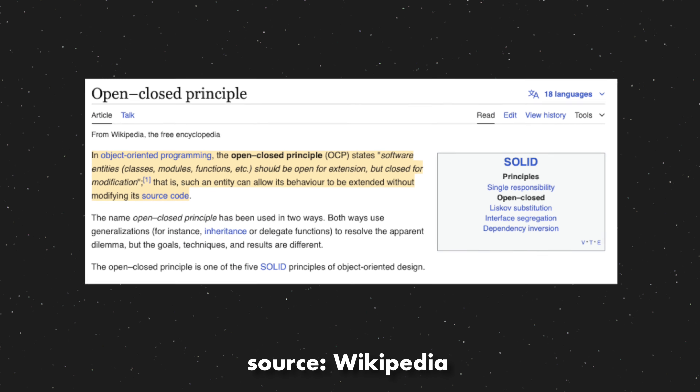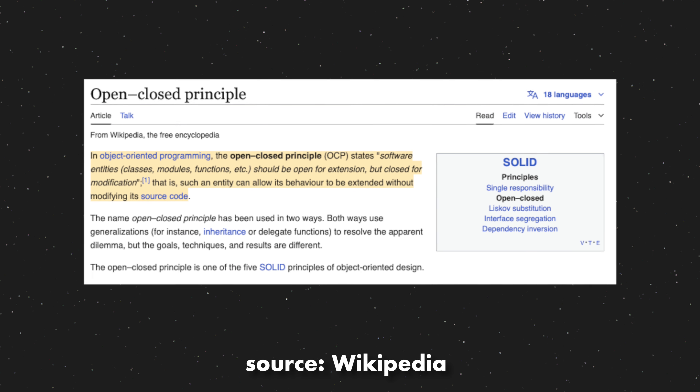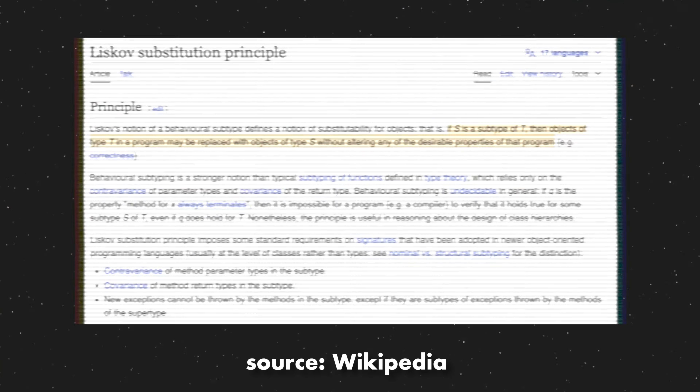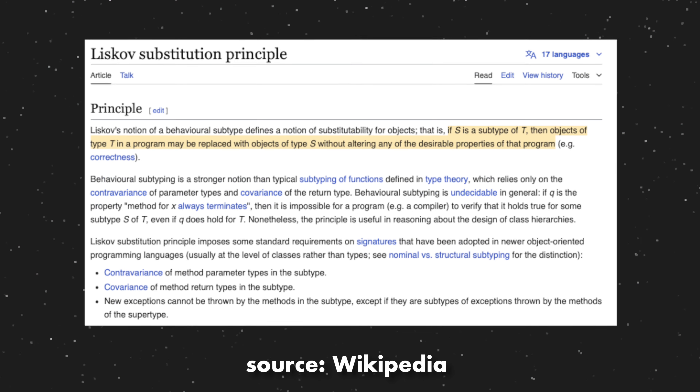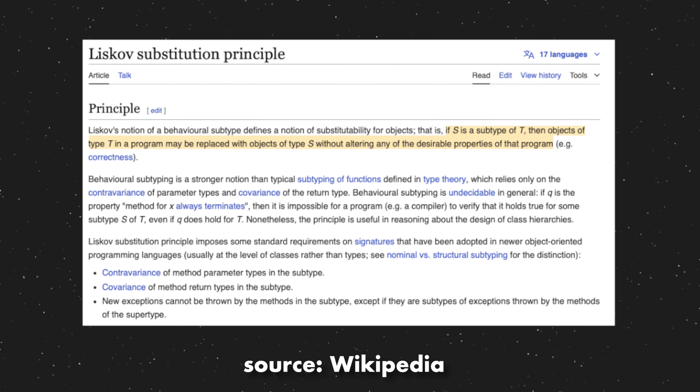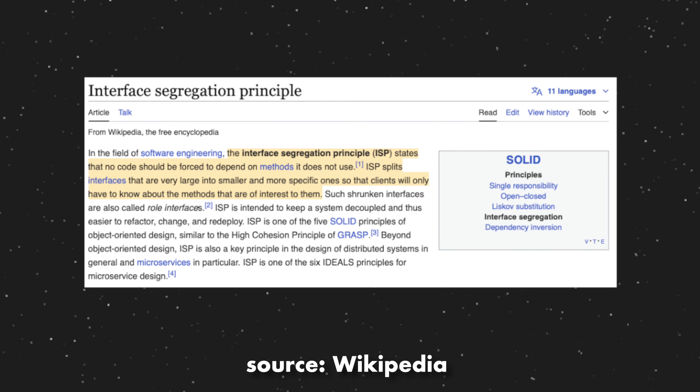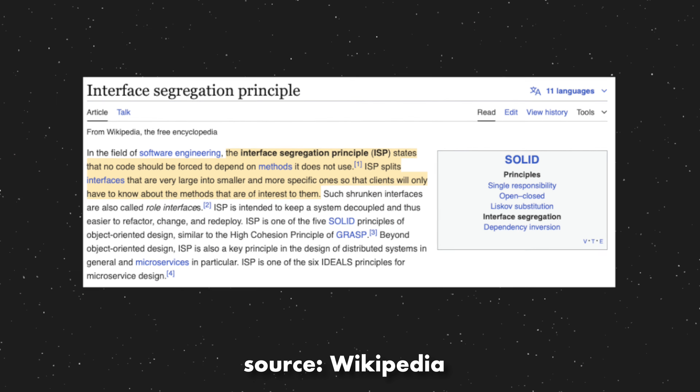The Open-Closed principle states that your code should be open to extension — so you can do more things on top of it and expand on it — but closed to modification, meaning you're not changing existing behavior, you're just building on top of it and around it. Liskov Substitution means that an object from a superclass should be replaceable by an object from a subclass. Interface Segregation means that code shouldn't need to implement methods on interfaces that it doesn't use — instead of having really large over-encompassing interfaces, you split them into multiple smaller interfaces so you can only implement the ones you actually care about.